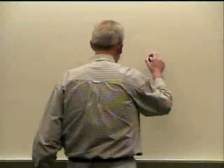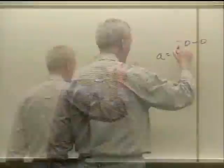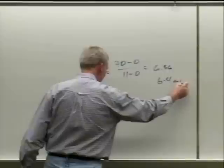The acceleration was 70 minus 0 over 11 minus 0, giving 6.36 — some of you put 6.4 meters per second squared, either one was acceptable.